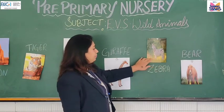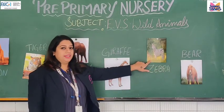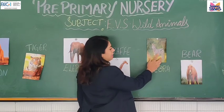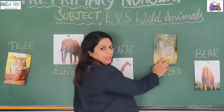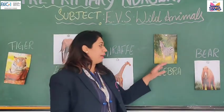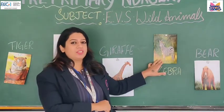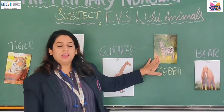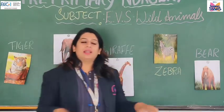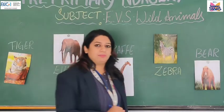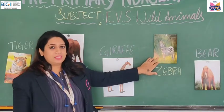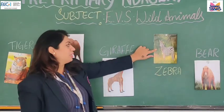Now let's see the next animal. This is a zebra. Children, can you see the black and white stripes on its body? It has black and white stripes all around its body. Have you seen a zebra crossing near the traffic signal where you have to walk to cross the road? This zebra crossing is named after this animal because it also has black and white stripes, just like the zebra crossing. So it is called zebra crossing. Zebra also eats a lot of grass and leaves in the forest.